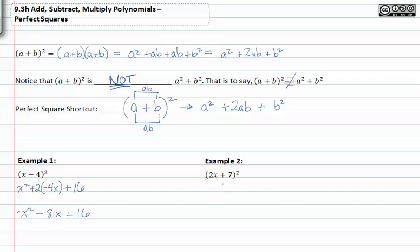We can do the same thing on example two. Since it's this binomial raised to a second power, we can square the first term, find the product of the two terms and multiply them by 2, and square the last term. So your final answer will be 4x squared plus 28x plus 49.